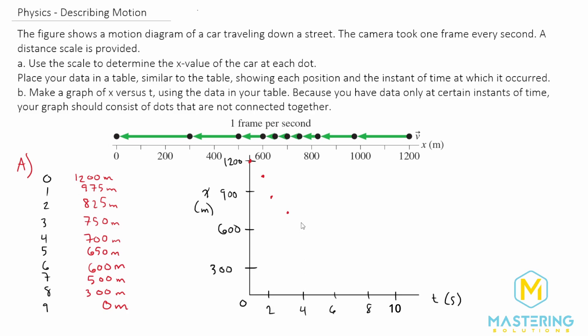Four is 700. So we'll see that one's there. Five is 650. Six is 600. Seven is 500. So that's going to be down about there. So eight comes all the way down to 300 down here. And then nine is zero.